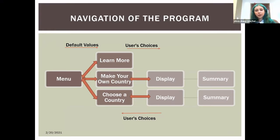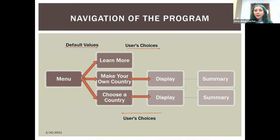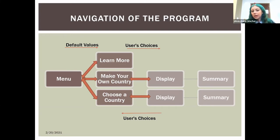The first screen users see is our menu with options: learn more, make your own country, or choose a country. The learn more option provides information about epidemiology in general and each variable users will manipulate when designing their disease. Within make your own country, users choose the shape and color of their country, infection dot appearance, infection rate, duration of infection, and other variables. This also applies in choose a country, except they select an existing country using the geohistogram display.